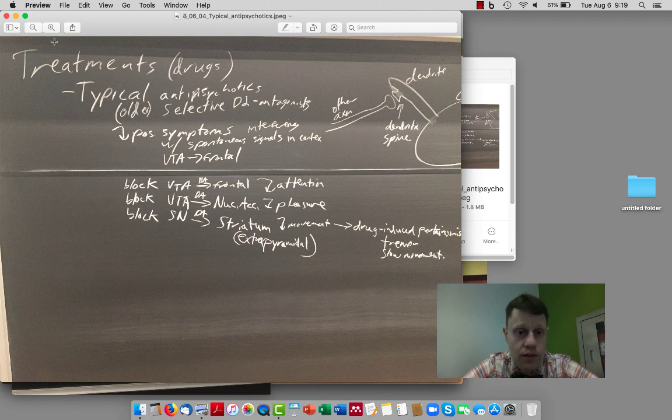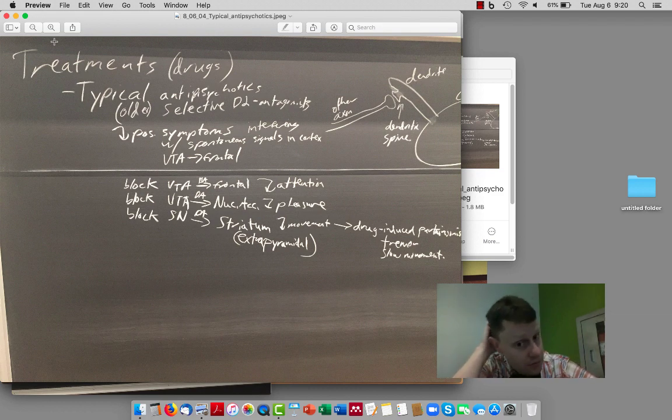So treatments for schizophrenia are divided into two classes, the so-called typical antipsychotics, which are fairly selective for D2 antagonists, and these are especially effective at decreasing positive symptoms. But because they're blocking dopamine, they can also interfere with cognitive function and attention, they can interfere with the ability to experience pleasure. And so those two projections of the nucleus accumbens can worsen the cognitive symptoms, the frontal lobe projection, and the negative symptoms by blocking the nucleus accumbens dopamine receptors.